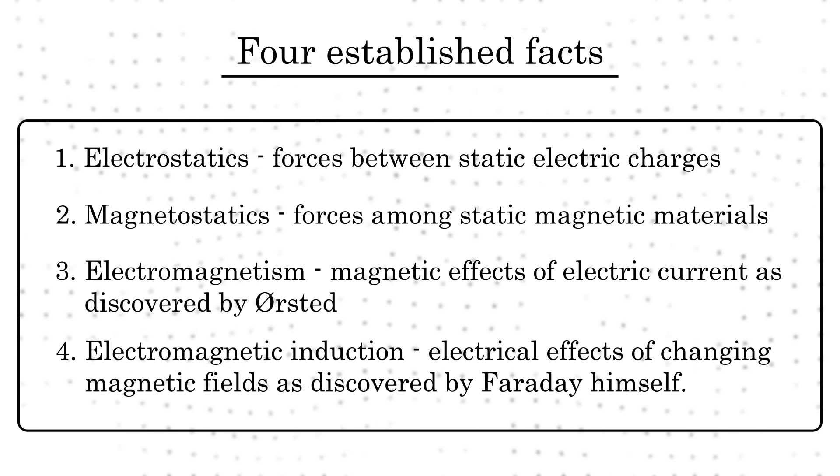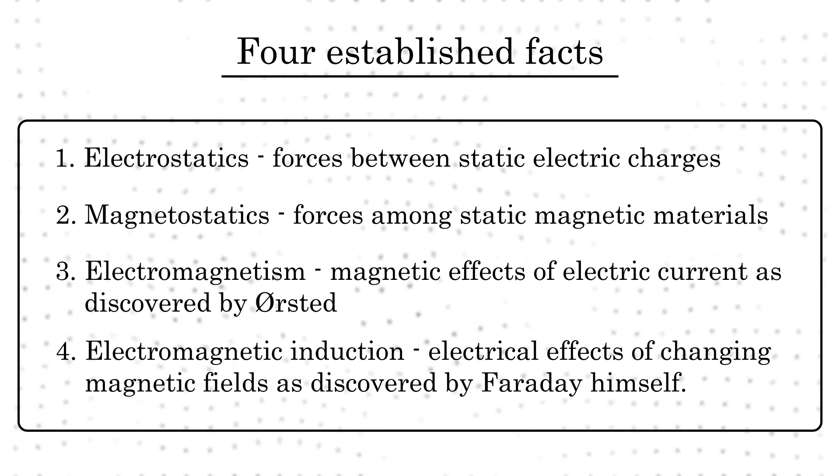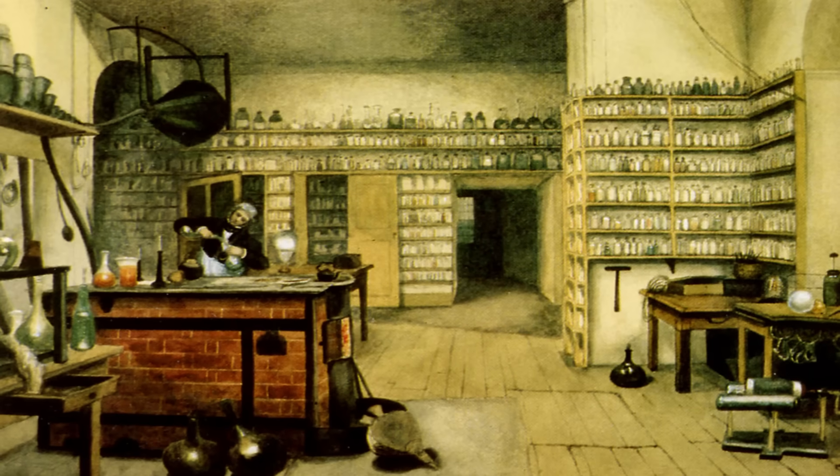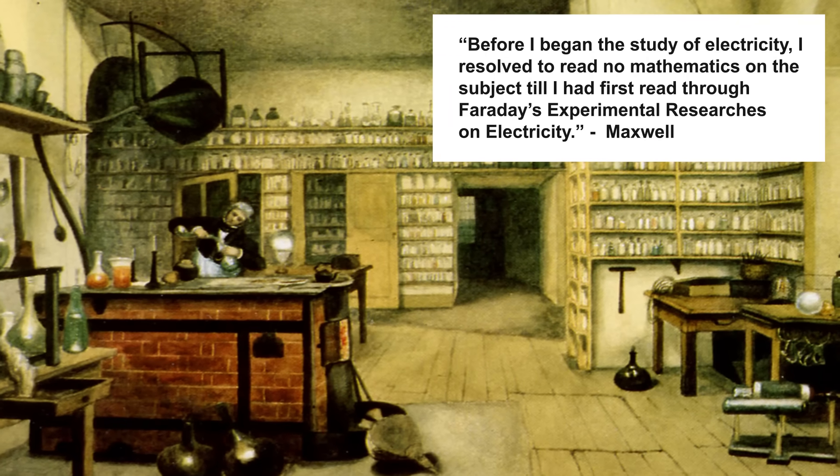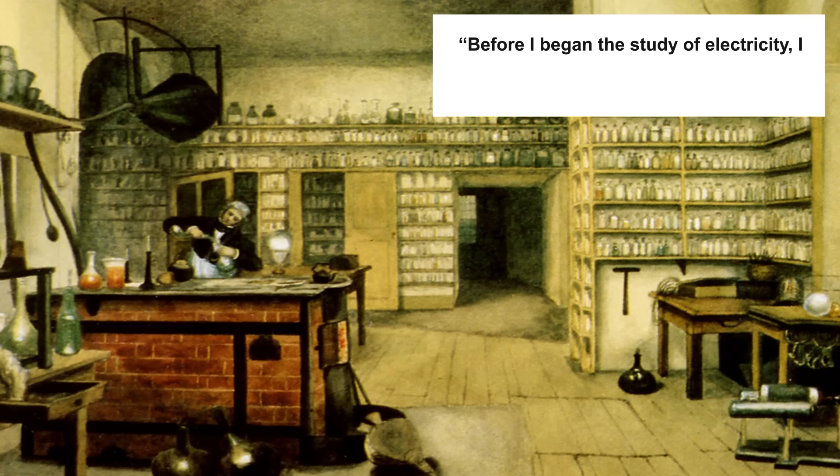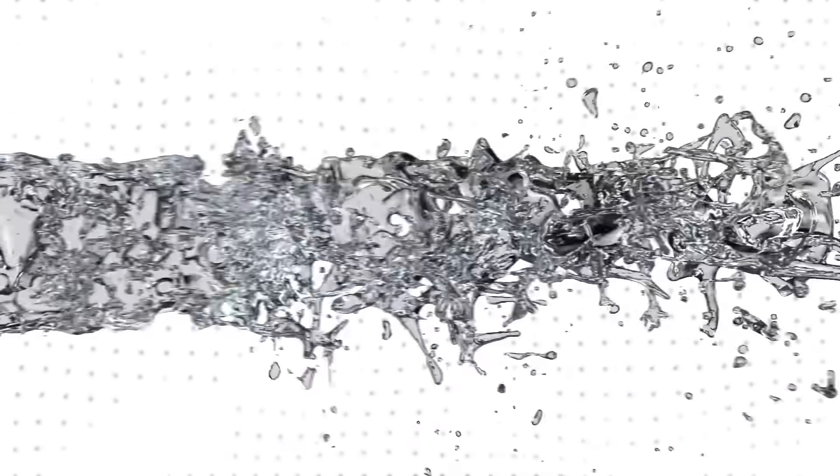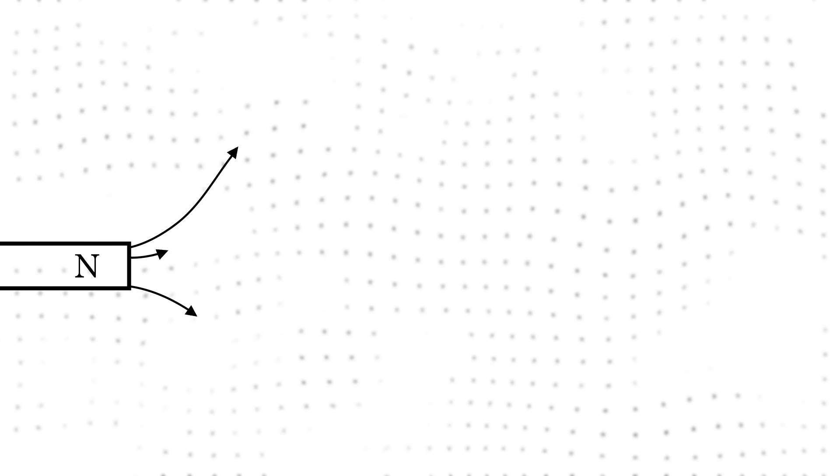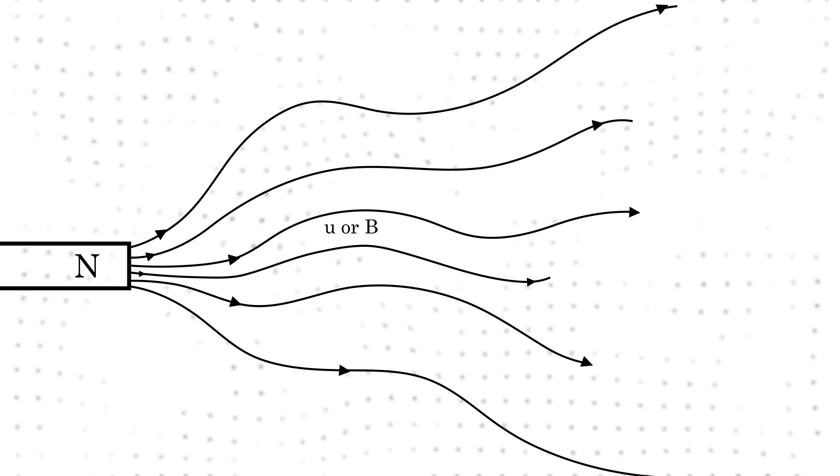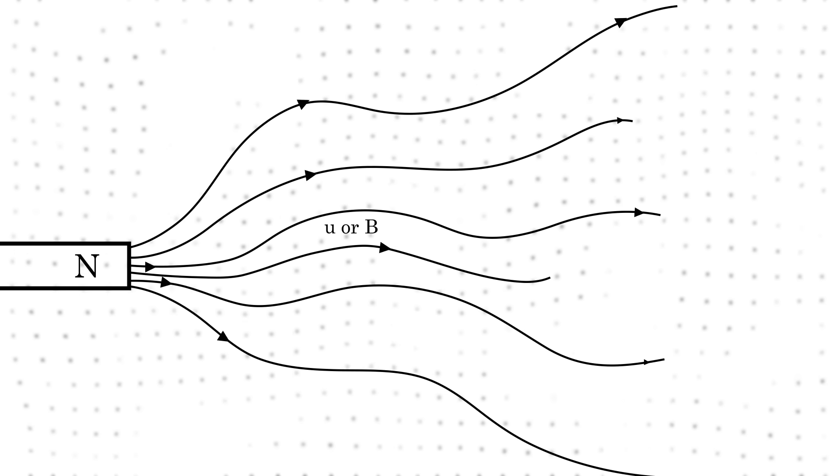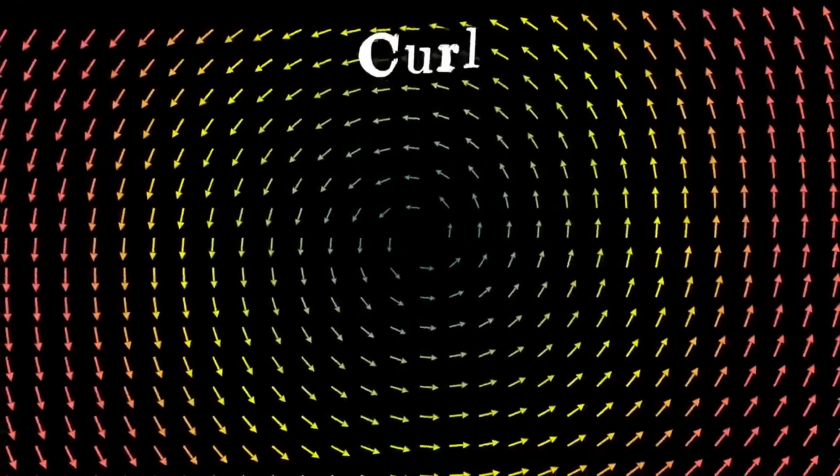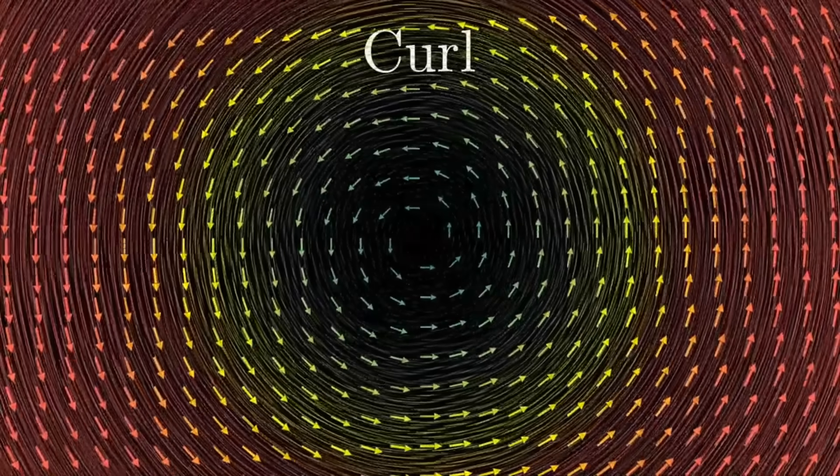4. Electromagnetic induction - electrical effects of changing magnetic fields as discovered by Faraday himself. Maxwell decided to first understand Faraday's work and intuition before doing any mathematics, a decision which proved to be very fruitful. Faraday had inspired Maxwell to think of electricity and magnetism in terms of field lines, just like water flow. Before we go into how Maxwell derived those equations, we must understand two slightly technical terms: divergence and flux. That should be enough to capture the main essence of Maxwell equations.